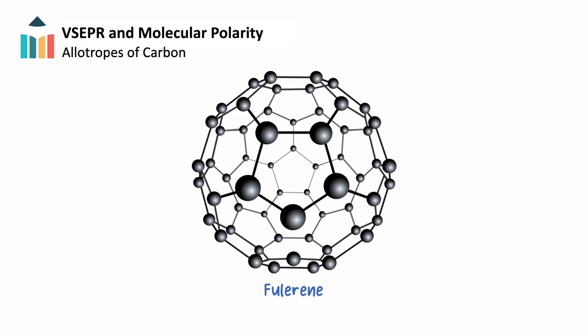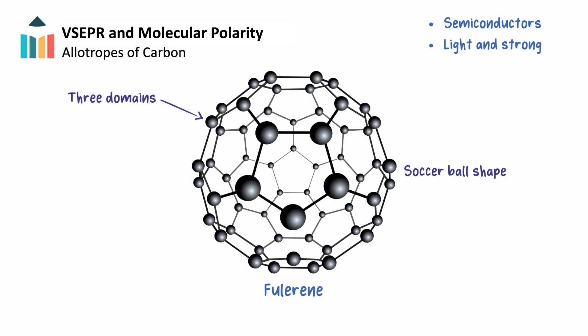Like graphite, the fullerene arrangement of carbon atoms is also trigonal, with each carbon bonded to three others. However, the bonding is not quite planar, as the structure forms a sphere of 60 carbon atoms resembling a carbon soccer ball. Fullerenes are semiconductors and are very light and strong with a low melting point. The applications for the different allotropes of carbon are widespread, varied, and ever increasing due to the unique properties of the different covalent bonding arrangements.